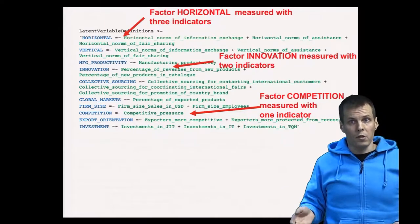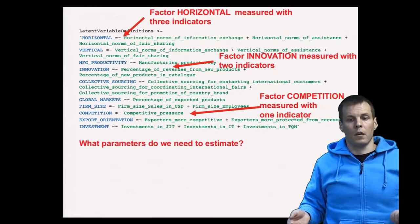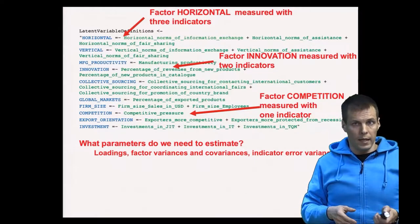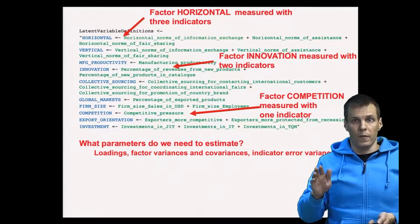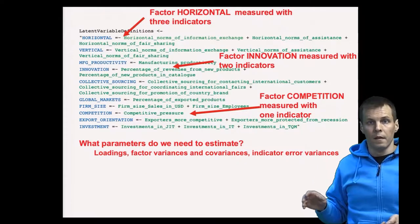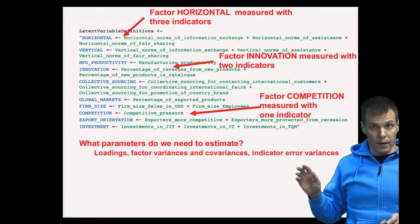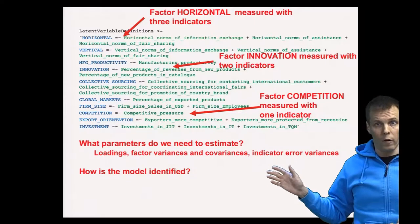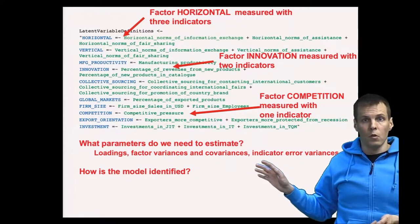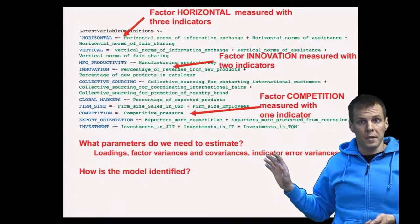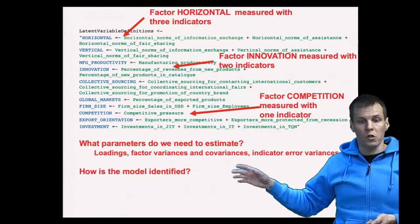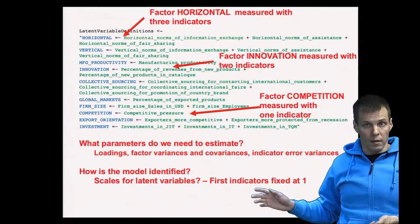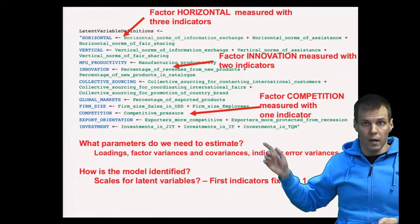What parameters do we need to estimate? We need to estimate our factor loadings. We are going to scale each latent variable using the first indicator fixing technique. So we will estimate factor variances, factor covariances, and indicator error variances. The model is identified using the following approach: we set the scale of each latent variable by fixing the first indicator to one, which is the default setting, so we don't have to specify it explicitly.